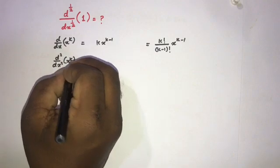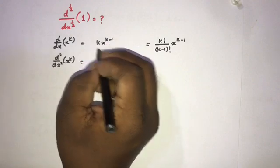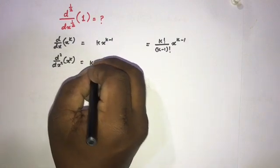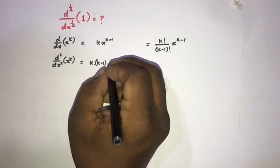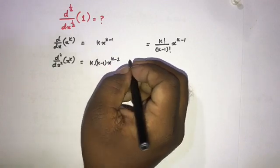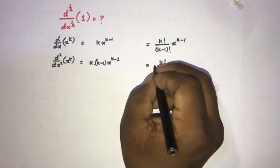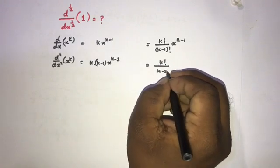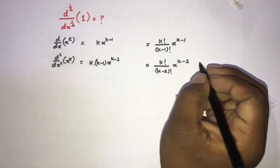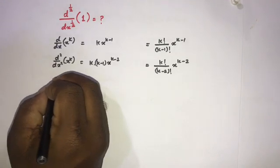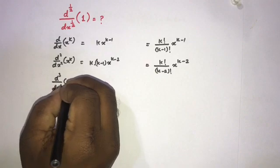Now I am going to take the second derivative of x to the k. We differentiate the first derivative again. k is a constant, and by the general power rule we get k minus 1 times x to the k minus 2. We can write this as k factorial over k minus 2 factorial times x to the k minus 2.